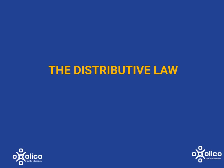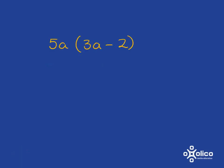Let's recap the distributive law for multiplying out. If we need to expand this, what we first need to remember is that if you just have 5a next to the bracket with no sign there, we've just left out the multiplication sign in algebra. The important thing to remember is that this 5a is multiplying the whole bracket — so it needs to multiply each and everything inside. To remind ourselves to do that, we can put in arrows.